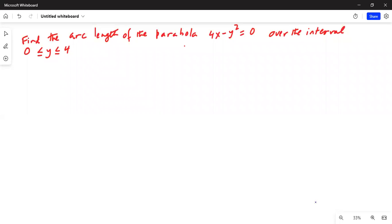Good morning everybody, how are you all today? We are going to discuss a problem in finding the arc length of a parabola. Find the arc length of the parabola 4x minus y squared equals zero over the interval zero less than or equal to y less than or equal to four. This is the problem that we are going to start.